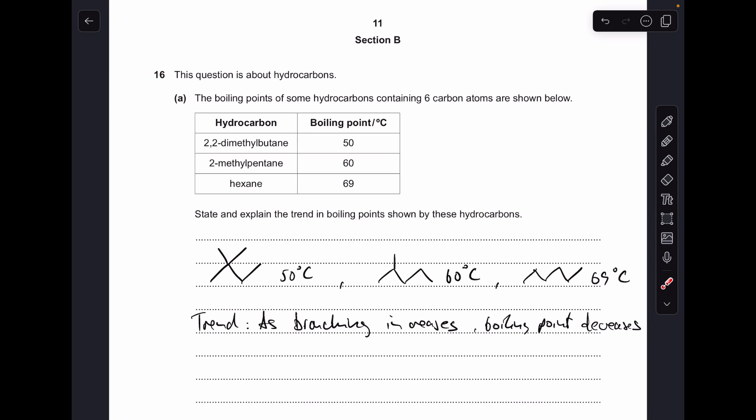The reason for that is the branching reduces the surface contact between the molecules and that leads to weaker London forces. So you could say induced dipole-dipole forces, and obviously if those intermolecular forces are weaker, less energy is going to be needed to overcome them or break them.